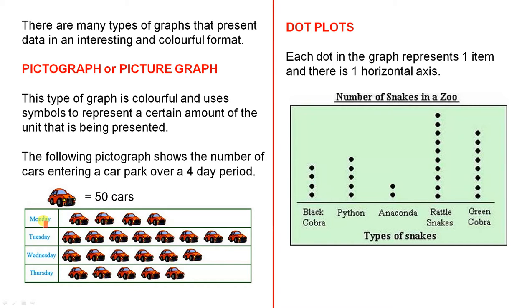So for example on Monday, 50, 100, 150, 200. So on Monday we had 200 cars and so on. You can see for example that Tuesday was the most popular day.